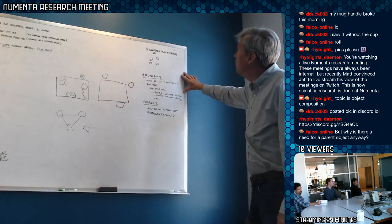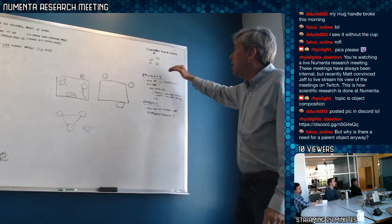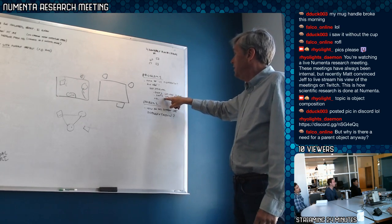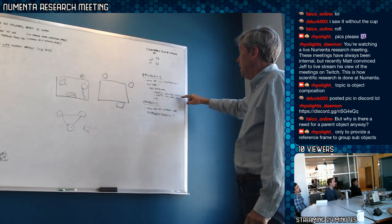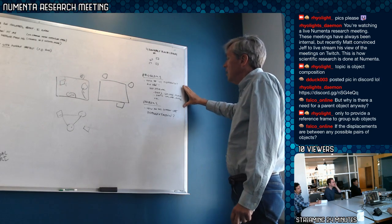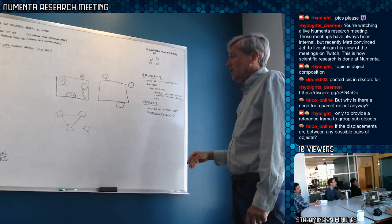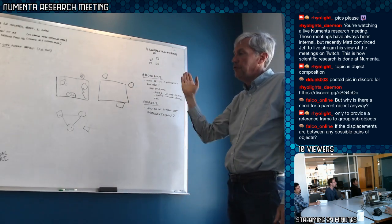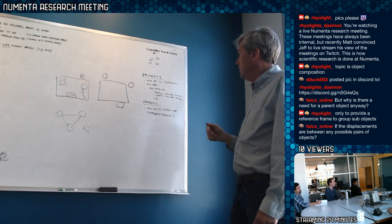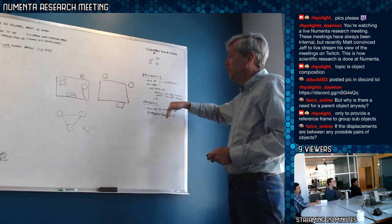Honestly, the problem I want to work on is two things. One is the problem of representation: how do I represent an object where I have a set of displacements relative to some parent reference frame, and those displacements have to include location, orientation, and scale? That's a representational problem. The second problem is how do I learn that from a particular viewpoint without moving my body — just by changing the angular position of my sensor or sensors? These are two separate problems that you try to solve at the same time.